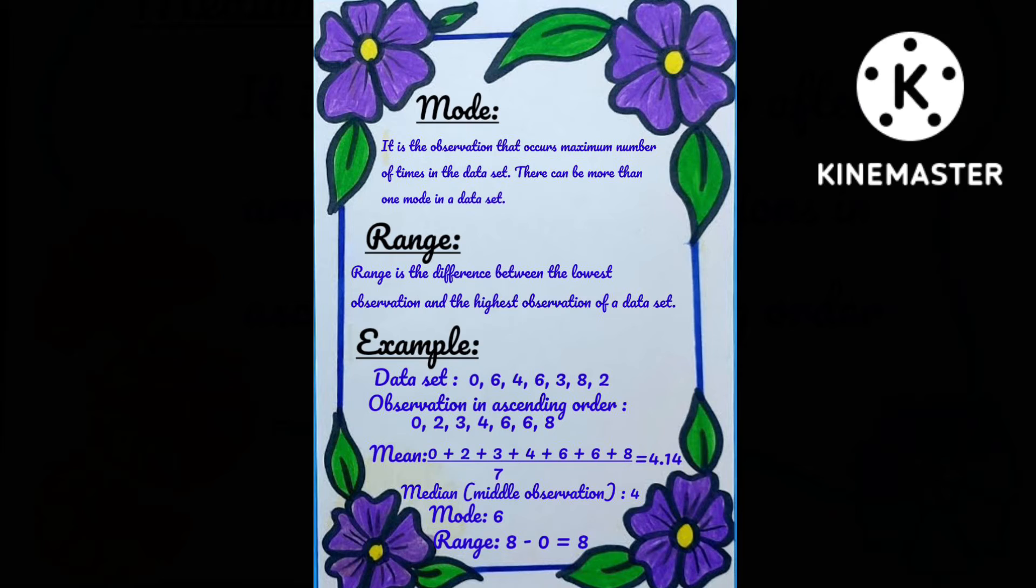Mode means the observation that occurs maximum number of times. Here six came twice and the other numbers came only once, so six is the mode. After then, range. Range is the difference between the lowest observation and the highest observation.